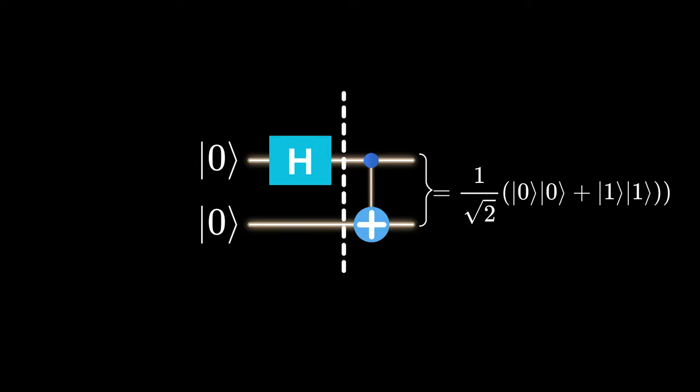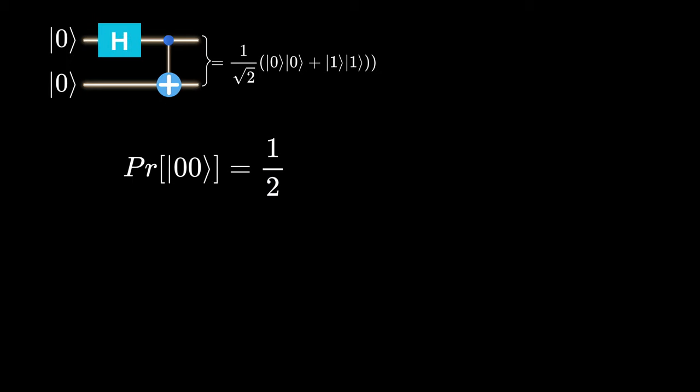The state of our control and target qubits are now interconnected and cannot be separated. Even the great physicist Albert Einstein was confounded by this concept. He famously referred to entanglement as a spooky action at a distance, which highlighted the mysterious and counterintuitive nature of quantum mechanics. Entanglement is key to quantum computing, boosting computational power exponentially.